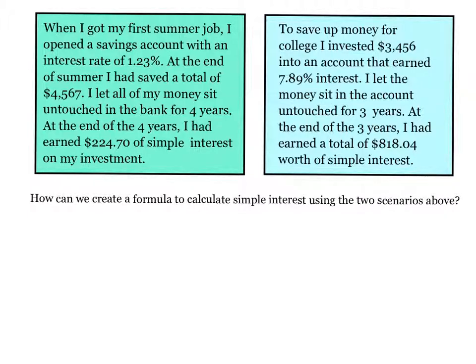Our second situation says that to save up money for college, I invested $3,456 into an account that earned 7.89% interest. I let the money sit in the account untouched for three years. At the end of the three years, I had earned a total of $818.04 worth of simple interest. Taking all these numbers, how can we have a formula that calculates simple interest? Give it a try.